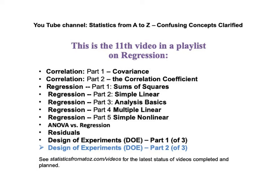This is the 11th video in my playlist on regression. It is called Design of Experiments, DOE, Part 2 of 3. Previously, I had uploaded these other 10 videos on regression. There were 2 videos on correlation and covariance, 5 videos on regression, 1 video comparing ANOVA to regression, and 1 on residuals, which are the errors in regression model, and the first of 3 on design of experiments.